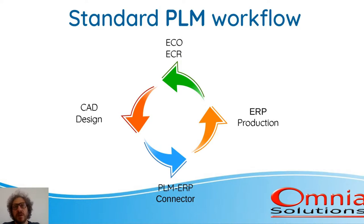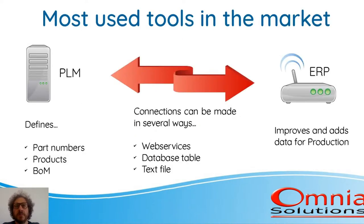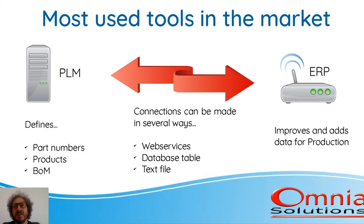Now, have a look at the tools that we can find in companies nowadays. Most companies have a PLM system that defines part numbers, products, bill of materials, documents, Engineering Change Requests, and Engineering Change Orders. Then, we have the ERP system that gets all this data and goes to production and delivers the product to the customer.